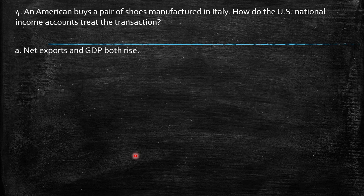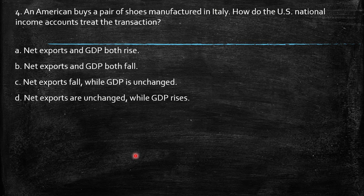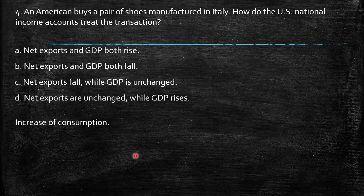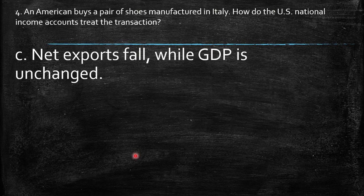Fourth question: an American buys a pair of shoes manufactured in Italy — how do national income accounts treat this transaction? We need to recognize there is an increase in consumption by the American buyer, which also increases imports. If everything else remains the same, this causes a decrease in net exports, while GDP does not change.